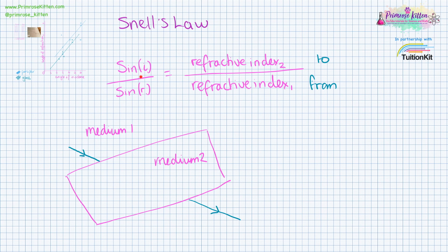That's going to be sine of the angle of incidence divided by sine of the angle of refraction, which is equal to refractive index of the thing that it's moving into, divided by refractive index of the thing that it's moving from. And it's important to note that at the critical angle, the angle of refraction is 90 degrees.